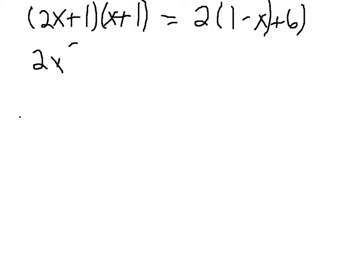So you get 2x squared plus 3x plus 1. And then you're going to want to distribute the 2 over the 1 minus x. So you get 2 minus 2x plus 6.